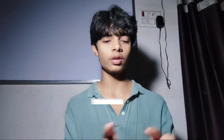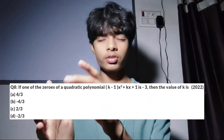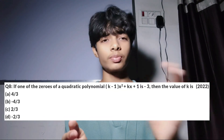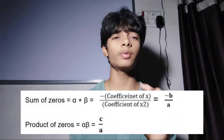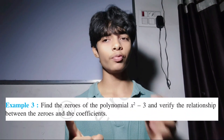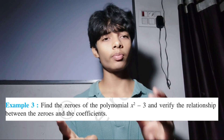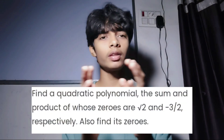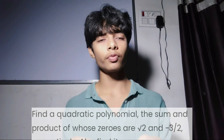Moving on to Polynomials. For MCQs, an expression will be given and you have to find constant k using the formulas α + β = −b/a and α × β = c/a. For 3-marker questions, the two types are: find the zeros of the given polynomial and verify the relationship between coefficients and zeros; or, given that α and β are zeros of a polynomial, frame a new polynomial whose zeros are 1/α and 1/β or similar.